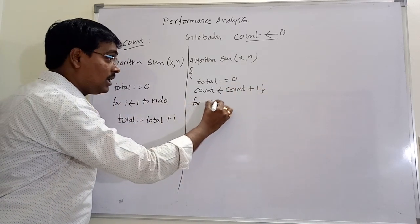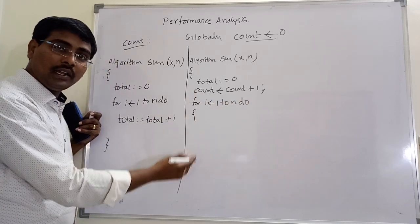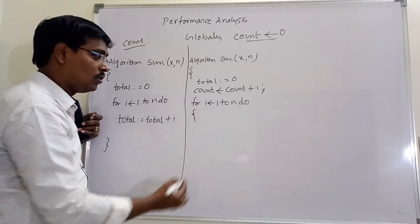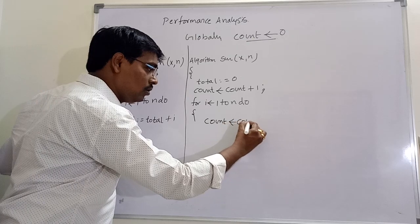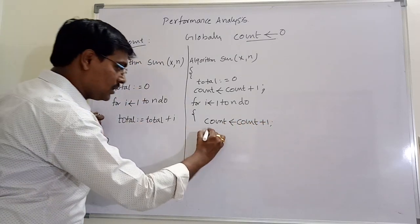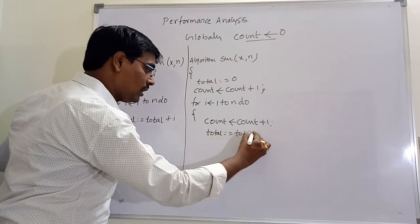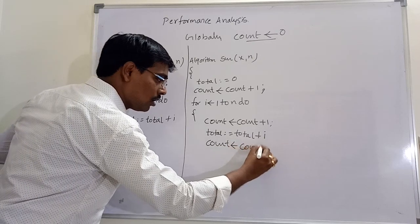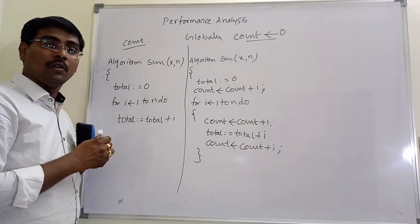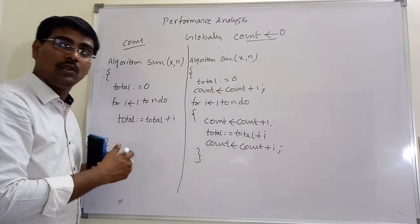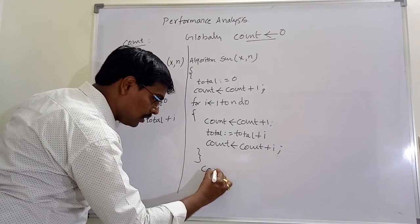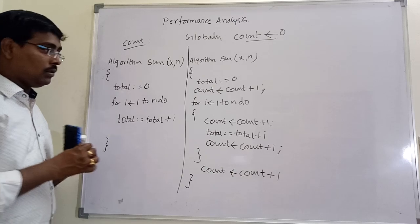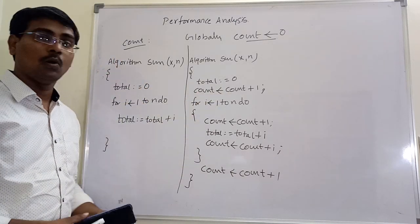Next, for i equal to 1 to n do — we are entering into the loop by taking i value as 1. So whenever we enter the loop, that is a valid step and the count value is incremented by 1. The next step is total equal to total plus i, which is also a valid step — count equals count plus 1. When we come out of the loop by taking i value as n plus 1, we also increment count value by 1.